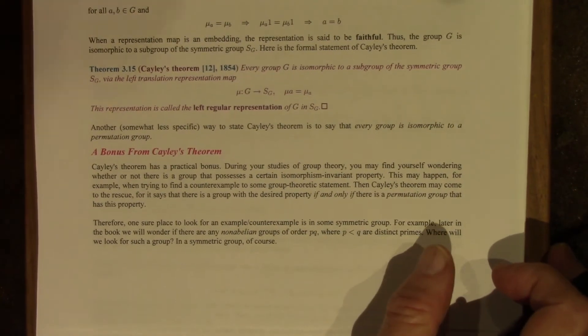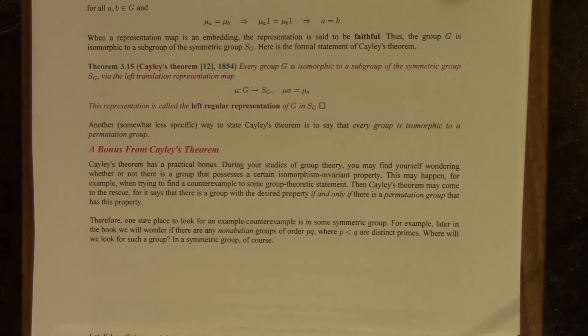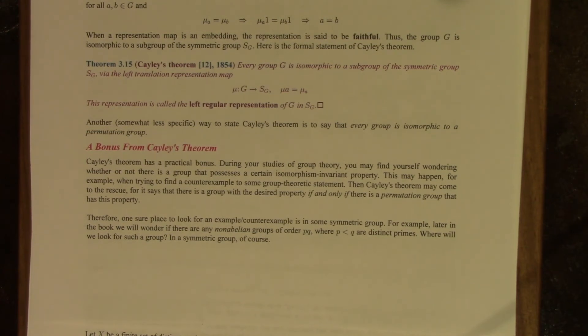Sometimes it's very useful, sometimes it's not. During your studies of group theory, you may find yourself wondering whether or not there's a group that possesses a certain isomorphic invariant property, a property that is shared by groups that are isomorphic, such as a group of certain order, for example. We'll talk about that in a minute. This could happen when you are, for example, trying to find a counterexample to some result that you want to show basically is false. Cayley's theorem might be just the thing you need because it says that there is a group with the desired property, the property you're looking for, if and only if there's a permutation group that has that property.